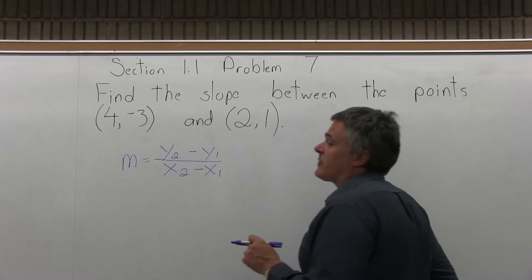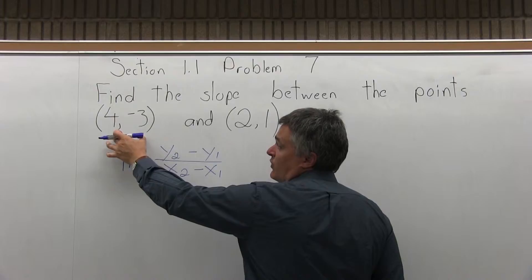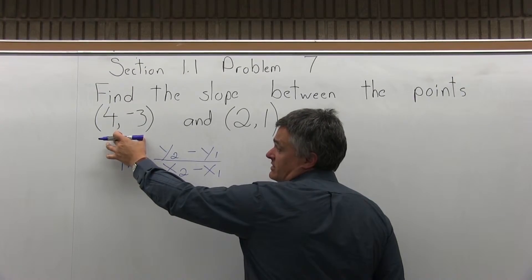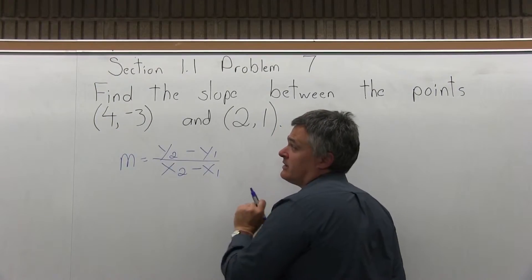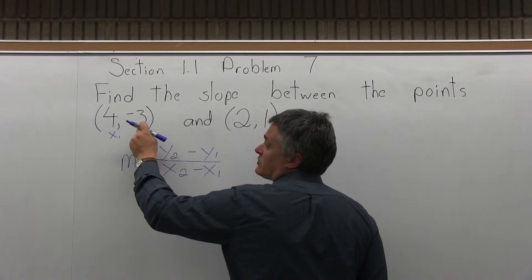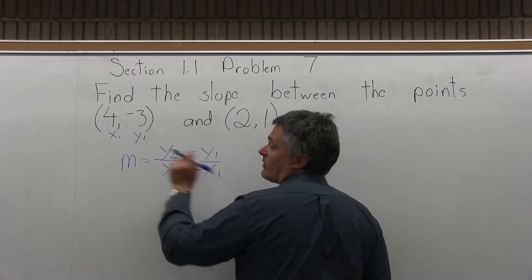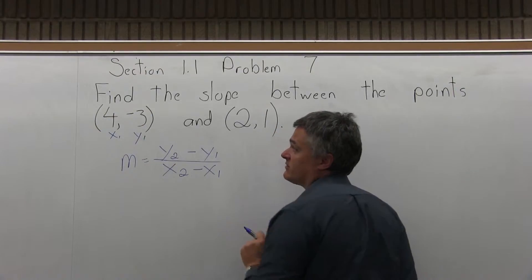So to fill it in, what I do is I label the coordinates of the two given points. (4, -3) is the first one given, so I consider it to be point 1. Its x coordinate of 4, I will label as x1. Its y coordinate of -3, I will label to be y1. So that's the x and y values of the first point.